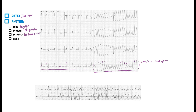From here to here is almost one whole box — about five little boxes — which is more than three little boxes, which equals 0.12 seconds. So this is wide complex tachycardia. Remember: high heart rate, regular rhythm, and wide QRS complex — you want to think about V-tach.